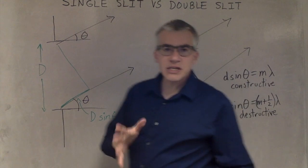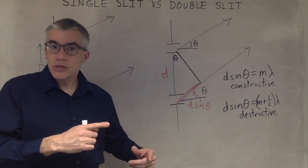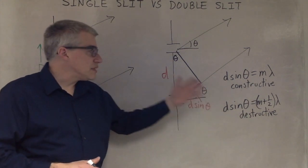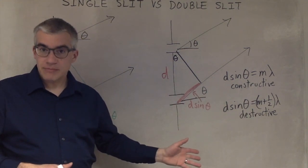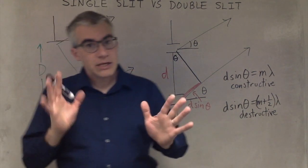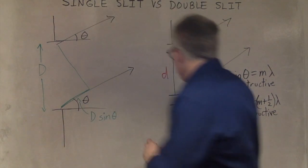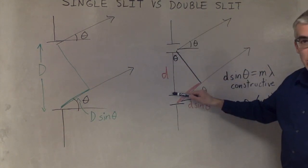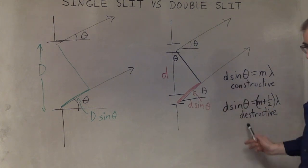For the single slit, it's actually the other way around. The constructive is at m plus a half lambda, and the destructive is at m lambda instead. There are a couple of details to get straight on that. The double slit has a spacing small d, and d sin theta is the path difference.